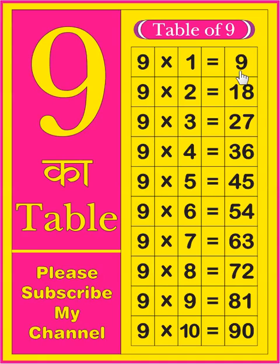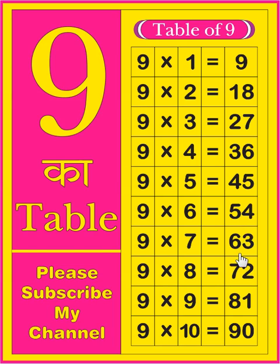So let's start. 9 1 9, 9 2 18, 9 3 27, 9 4 36, 9 5 45, 9 6 54, 9 7 63, 9 8 72, 9 9 81, 9 10 90.